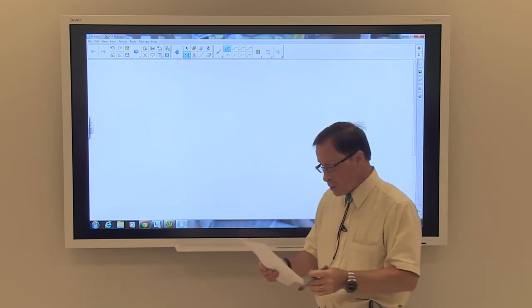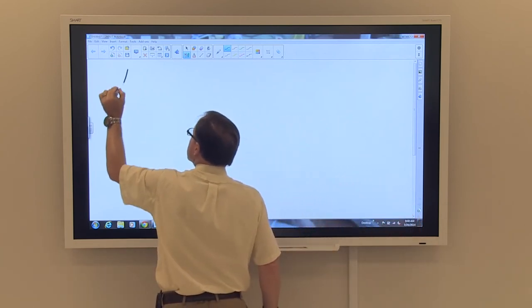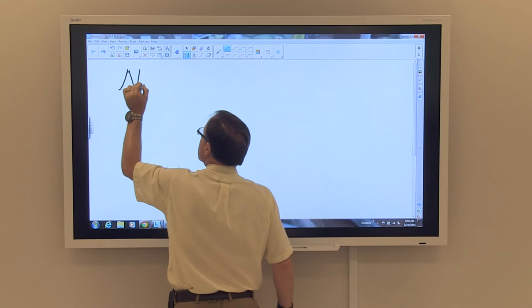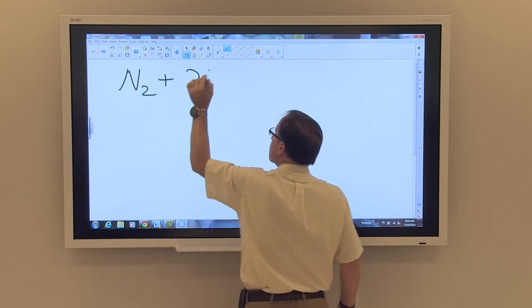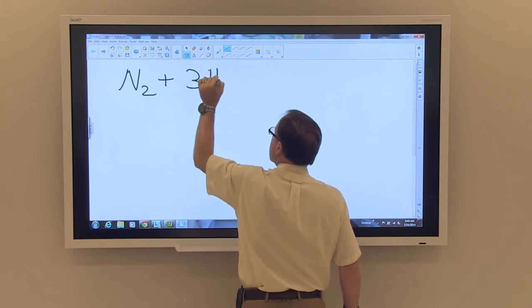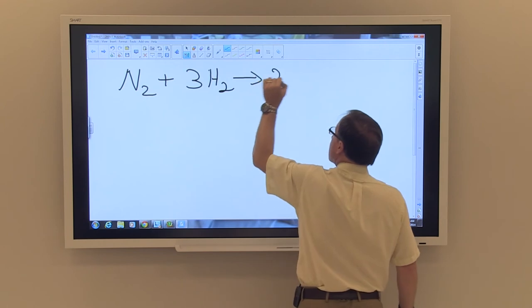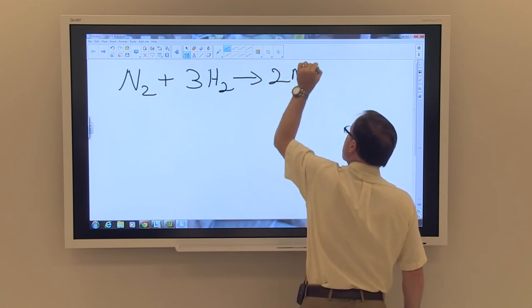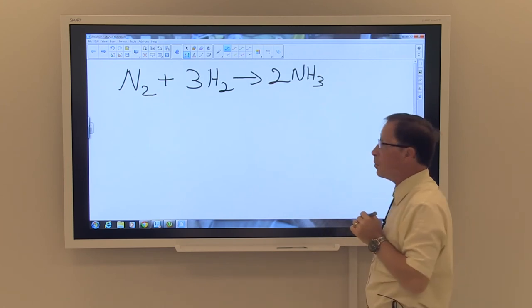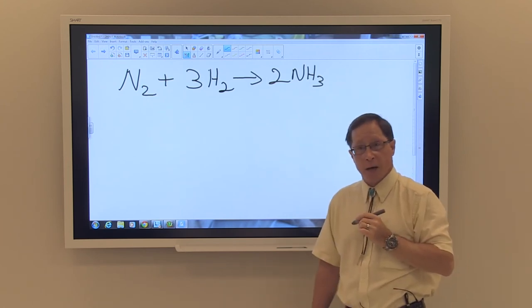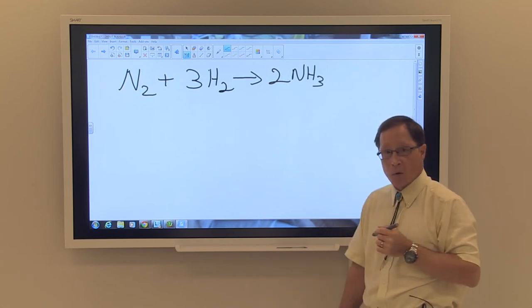Examples of these reactions would be the following. For a combination reaction, nitrogen plus hydrogen giving ammonia is a combination reaction, which is a very important reaction for making fertilizers.